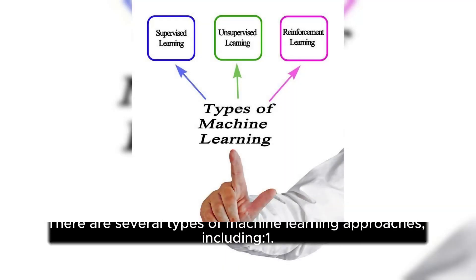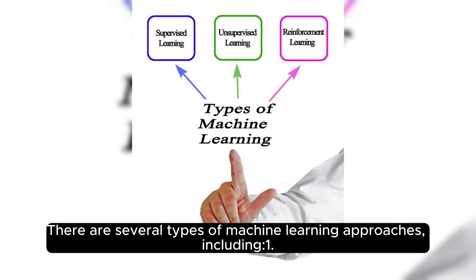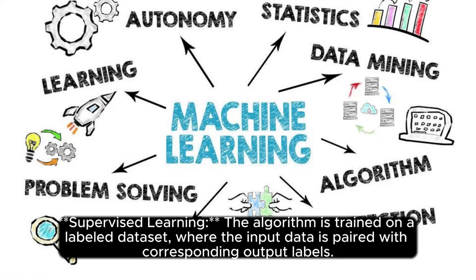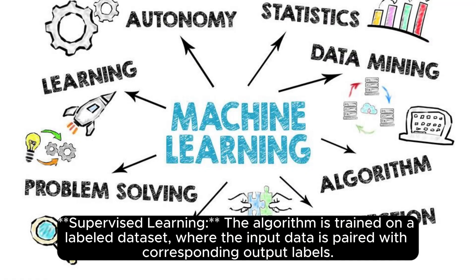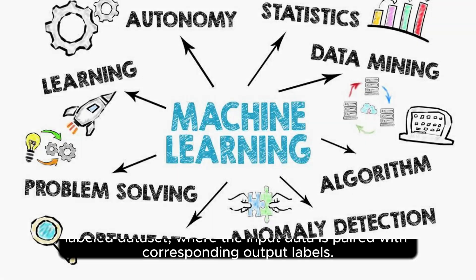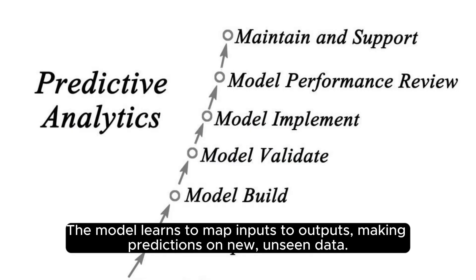There are several types of machine learning approaches. First, supervised learning: the algorithm is trained on a labeled dataset where the input data is paired with corresponding output labels. The model learns to map inputs to outputs, making predictions on new, unseen data.